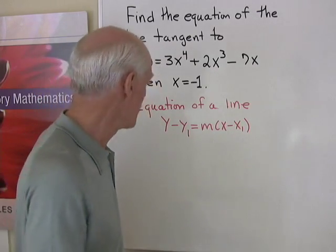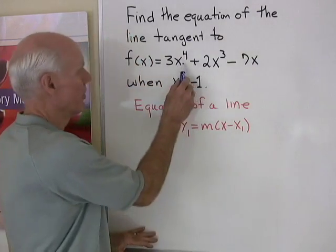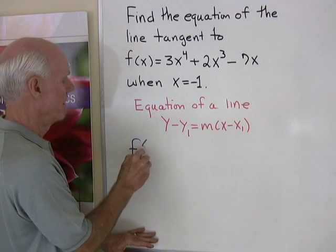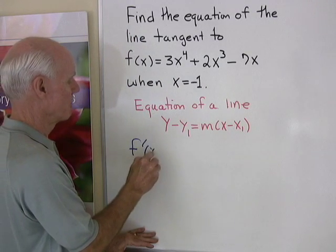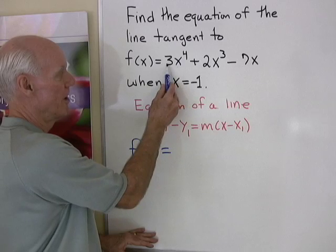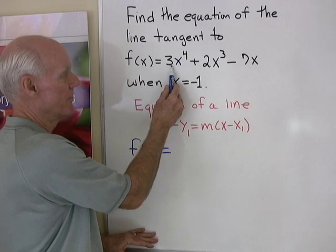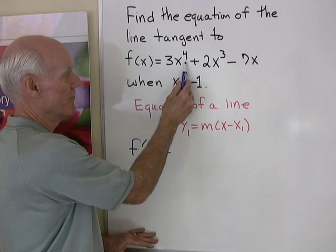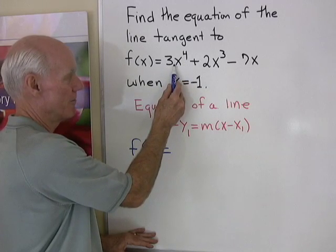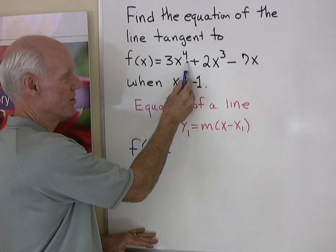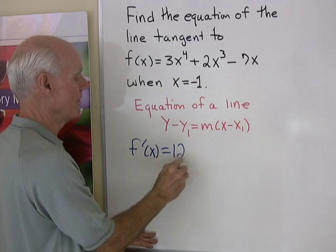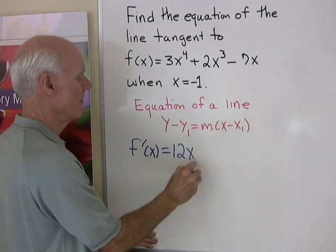Let's start this problem by finding the derivative. I'll just go through this really quickly using the rules we have. The derivative of 3x to the fourth is going to be 3 times 4x to the third, so that'll be 12x to the third.